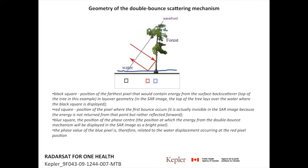What we measure here are two points: the water level change in the vertical direction, because that's where the radar hits the water, so if that point moves up and down it affects the radar phase. The second point is the horizontal movement of the tree — but the tree doesn't move horizontally, so that is always going to be close to zero phase. What we actually measure is the vertical movement of the water.